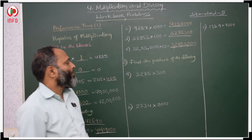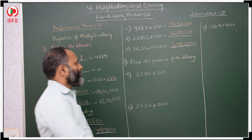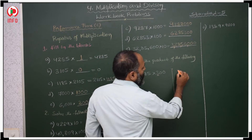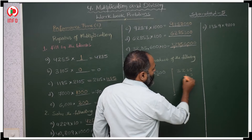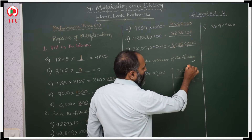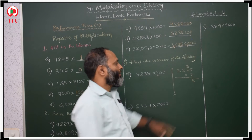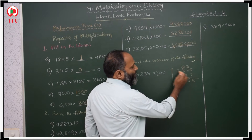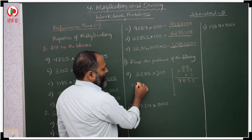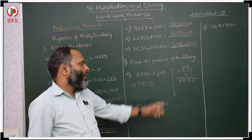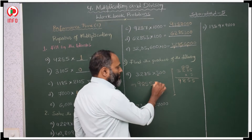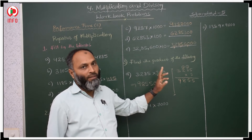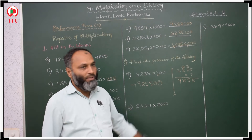Find the product of this number. First we have to find the product with 3. 3285 multiplied by 3: 3 fives are 15, carry 1. 3 eights are 24, plus 1 is 25, carry 2. 3 twos are 6, 6 plus 2 is 8. 3 threes are 9. The product when we multiply with 3 is 9855. In 300, how many zeros are there? That many zeros we have to keep. In short, when zeros are present, just multiply with the single digit, then keep that many zeros in the answer.